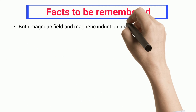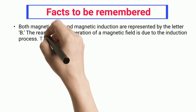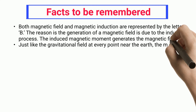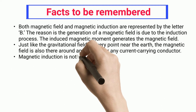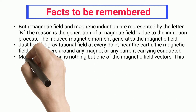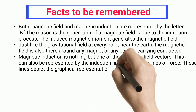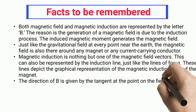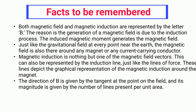Both magnetic field and magnetic induction are represented by the letter B. The reason is the generation of a magnetic field is due to the induction process. The induced magnetic moment generates the magnetic field. Just like the gravitational field at every point near the Earth, the magnetic field is also there around any magnet or any current-carrying conductor. Magnetic induction is nothing but one of the magnetic field vectors. This can also be represented by the induction line, just like the lines of force. These lines depict the graphical representation of the magnetic induction around the magnet.